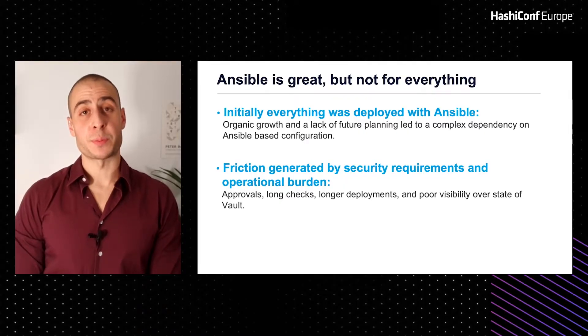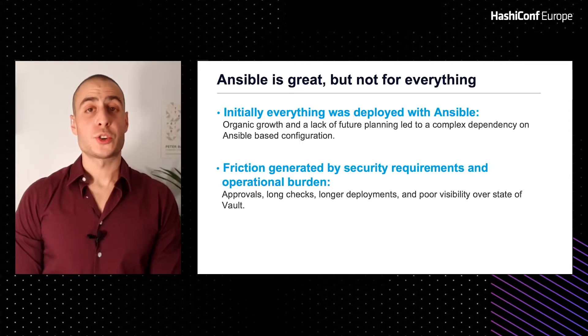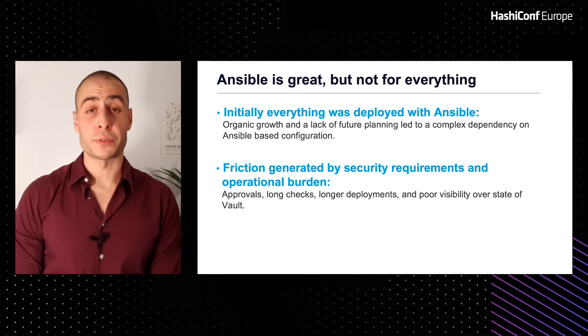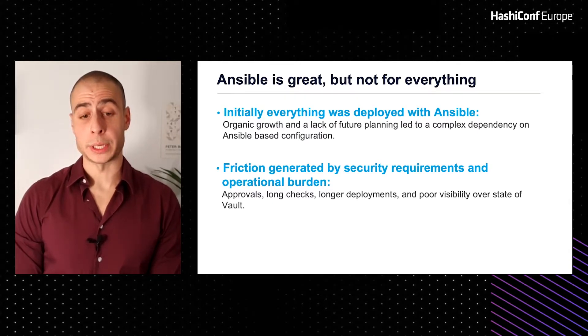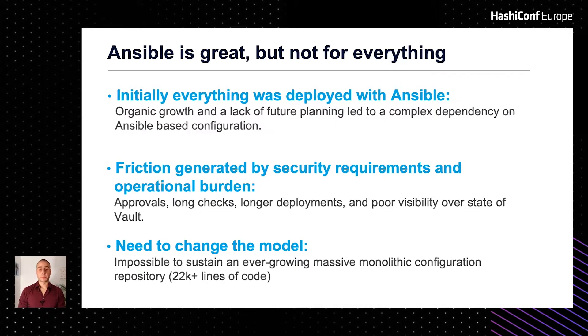Deploying Vault in console with Ansible is great, but the rapidly growing number of teams dependent on Vault for securing their applications was starting to highlight the constraints of having a monolithic repository being deployed via Ansible. Ansible wasn't the only problem. We had two approvals for every change from IAM, checks that were taking upwards of 30 minutes, and we were seeing longer and longer deployment times, upwards of two hours at one point, causing huge friction and a really terrible customer experience.